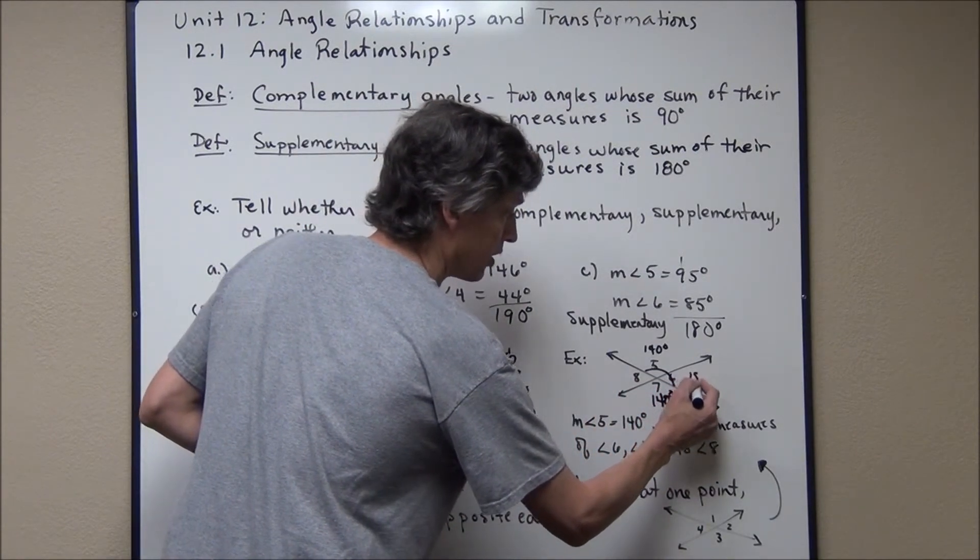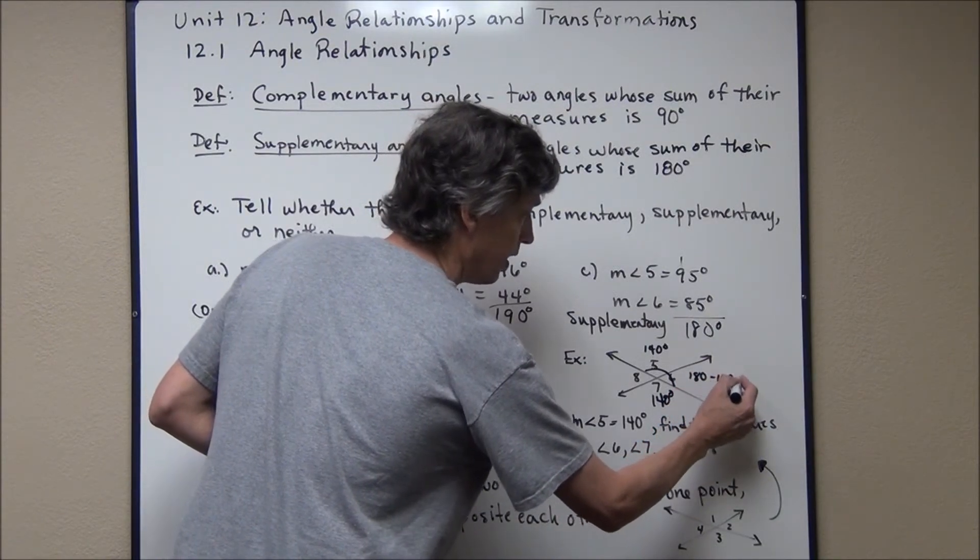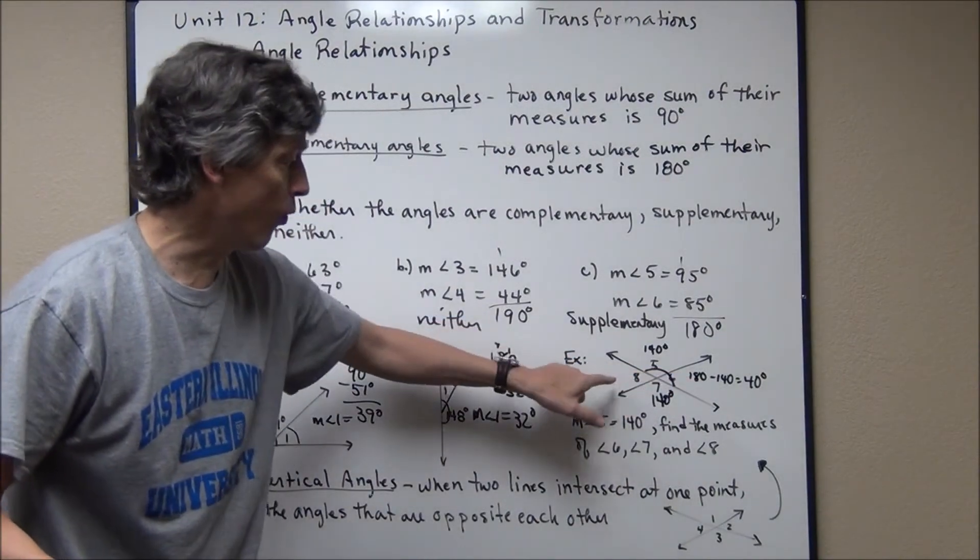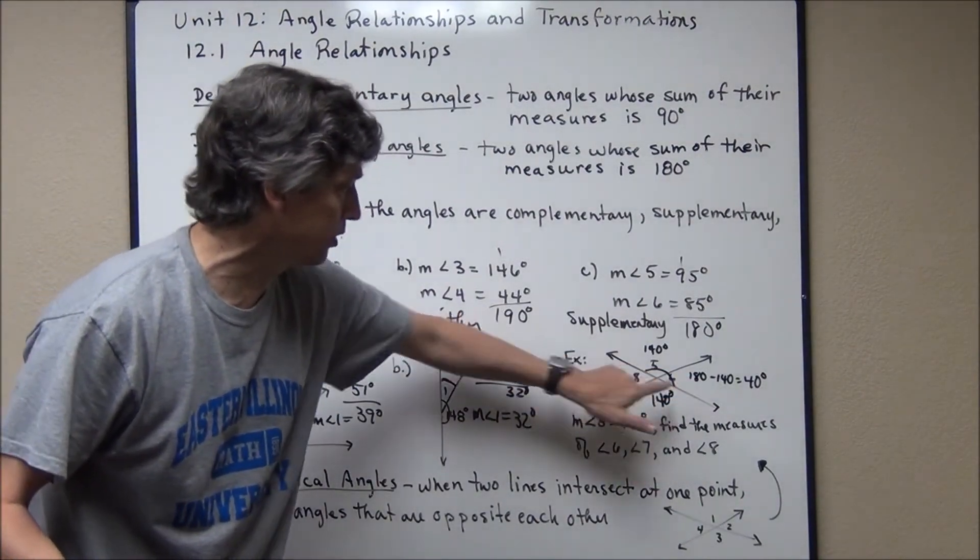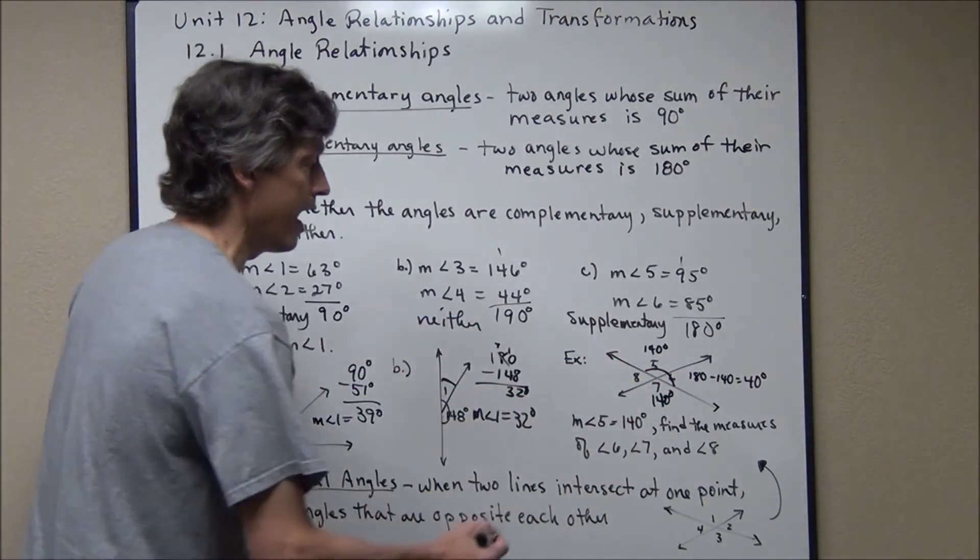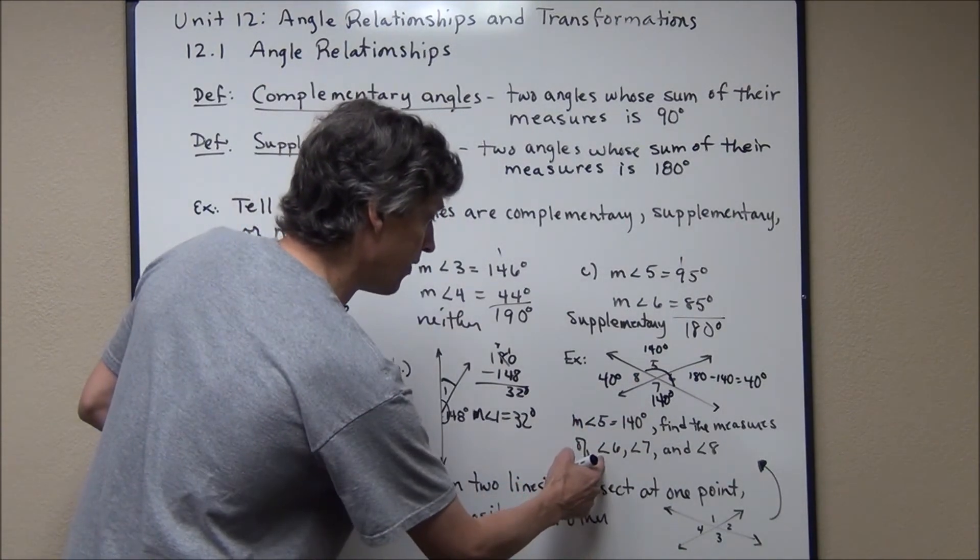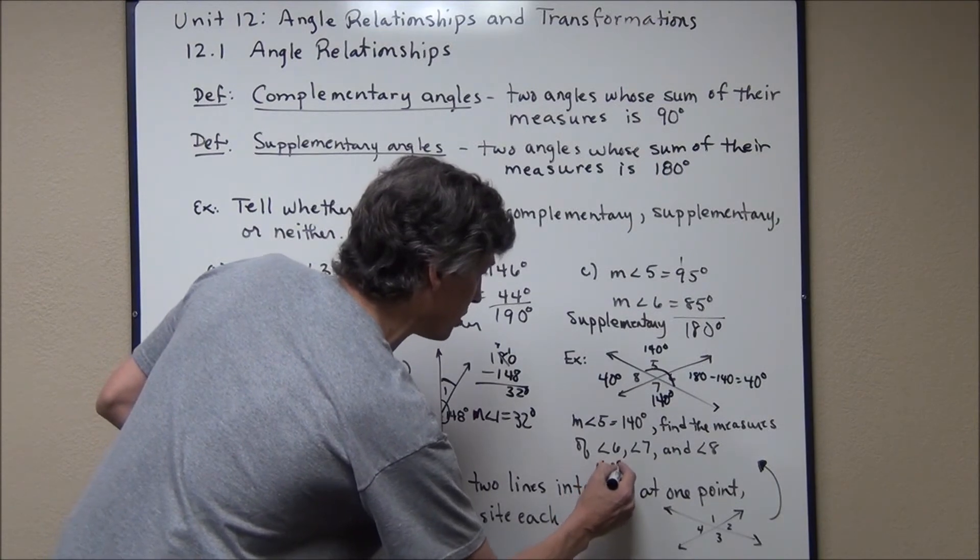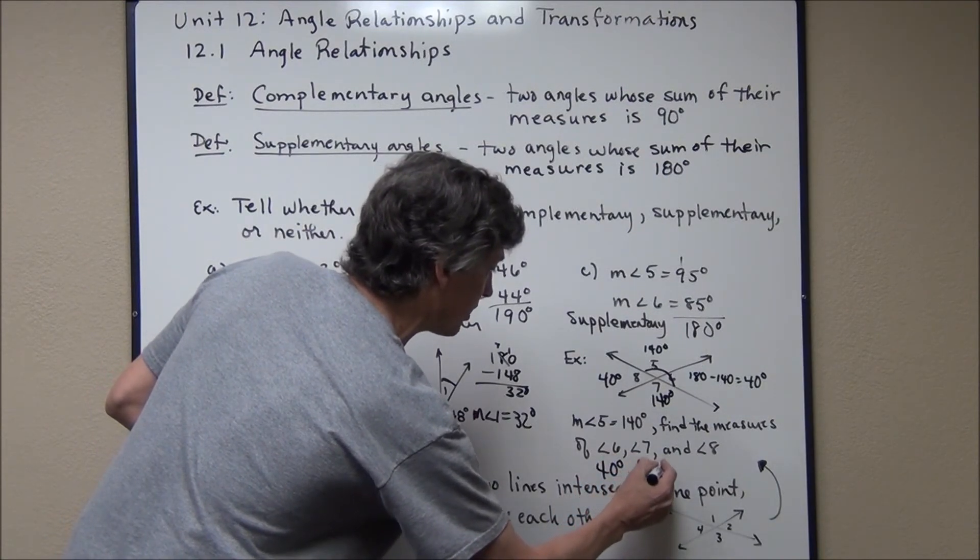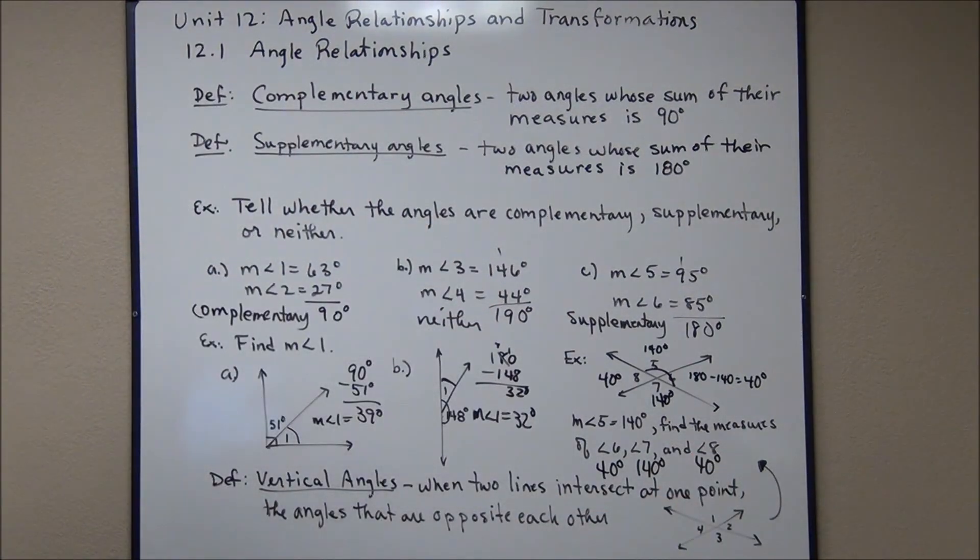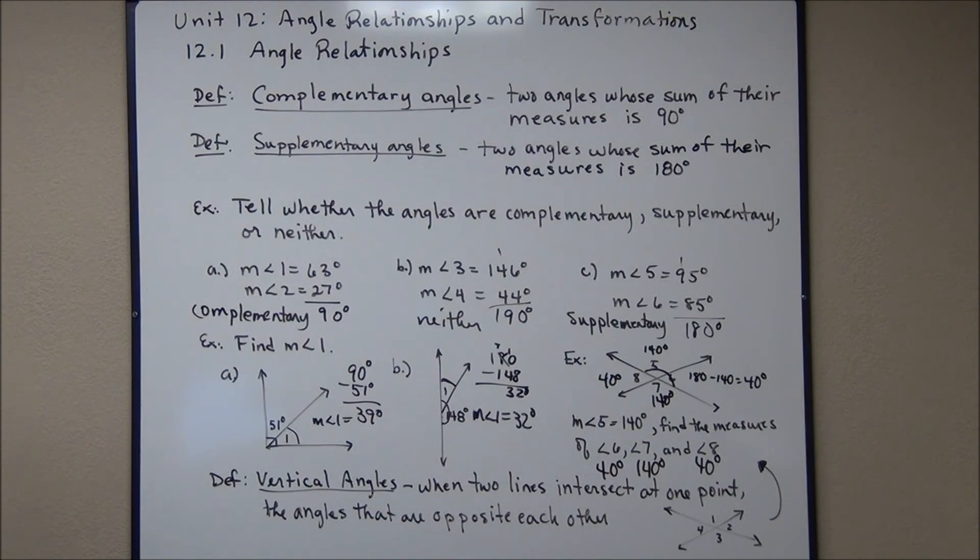So angle six is 180 minus 140, which is 40 degrees. So that means angle six is 40. Therefore, angle eight because angle six and angle eight are vertical angles. Angle eight is also 40 degrees. So in this case, the measure of angle six was 40 degrees. The measure of angle seven was 140 degrees. And the measure of angle eight is 40 degrees. These are very special pairs of angles. Got to get used to this. So practice, practice, practice.